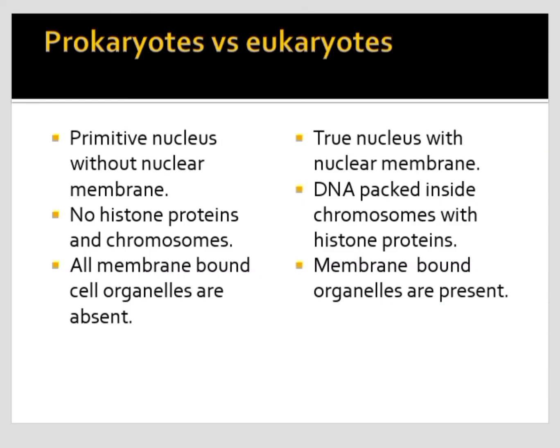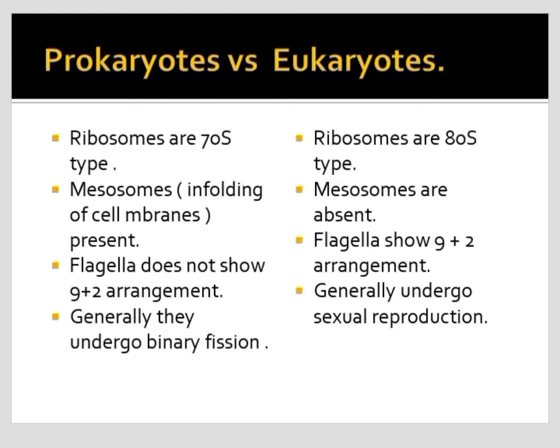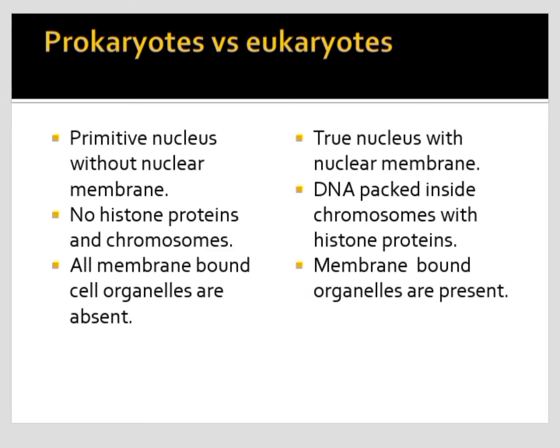Coming to membrane-bound organelles — these include mitochondria, endoplasmic reticulum, Golgi apparatus, and lysosomes. All these cell organelles are absent in prokaryotes, whereas they are all present in eukaryotic organisms, where they perform different functions.